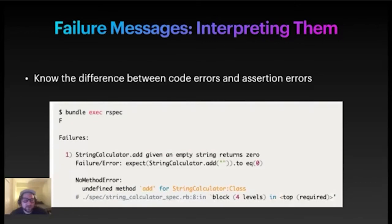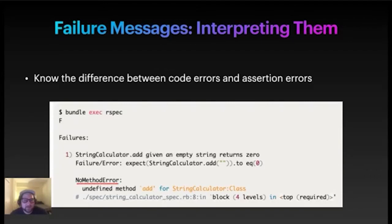If you have a code error, it's more likely that it's a problem with the test itself and not the software under test, but that's not always true. It's good to know at a glance — if you see something like this, it's a different flavor of error than the assertion type of error.